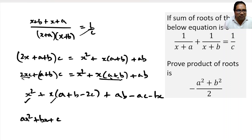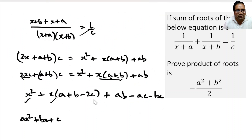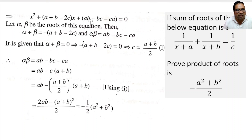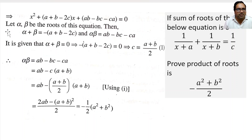For a quadratic equation, sum of the roots is −b/a and product of roots is c/a. Our equation is x² + (a + b − 2c)x + (ab − bc − ca) = 0. So the sum of the roots is −(a + b − 2c) and the product of the roots is (ab − bc − ca).